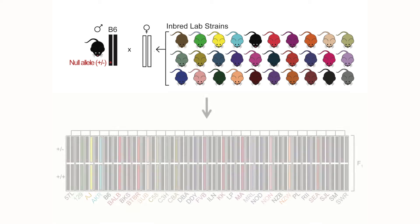This produced 30 distinct F1 crosses where half the mice in each cross had one copy of the null allele and half were wild-type. We used this design to generate two independent cohorts of mice, one with a CACNA1C null allele and one with a TCF7L2 null allele. Mice were then tested for a variety of behavioral and physiological traits.